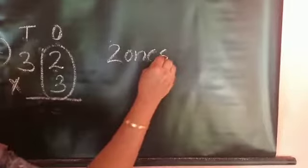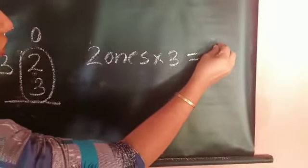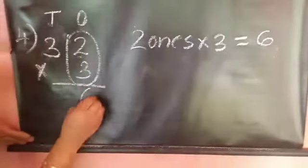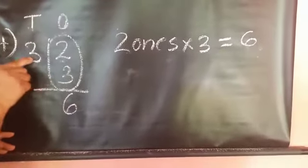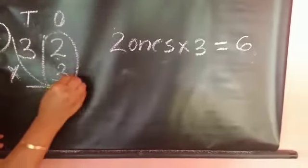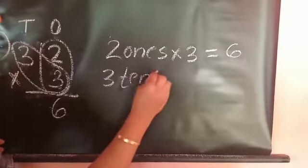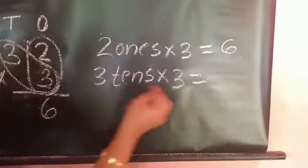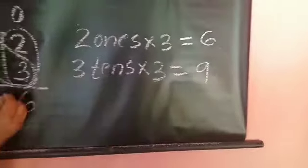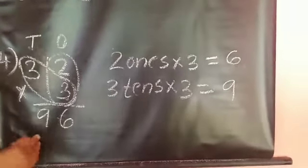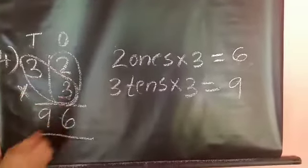Let's see one more example: 32 into 3. 32 means 2 ones and 3 tens. Multiply the digits in the ones place: 2 into 3 is equal to 6 ones. Write 6 in the ones place. Next, multiply the digits in the tens place: 3 tens into 3 is equal to 9 tens. Write 9 in the tens place. So the answer is 96. 32 into 3 is equal to 96.